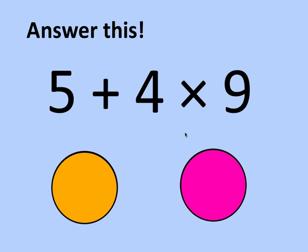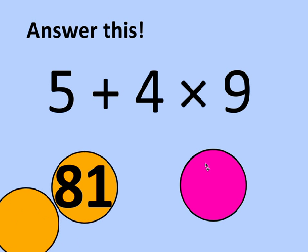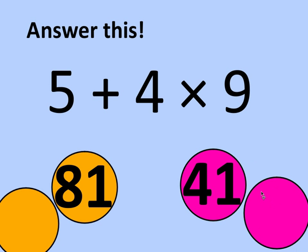Before I go into that, I've just got a little problem. 5 plus 4 times 9. I can't figure it out. I get two different answers. I get 81 one way, and I get 41 the other way.